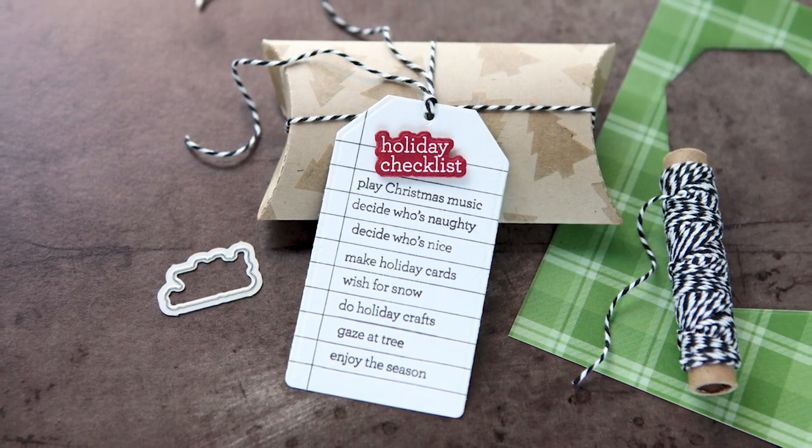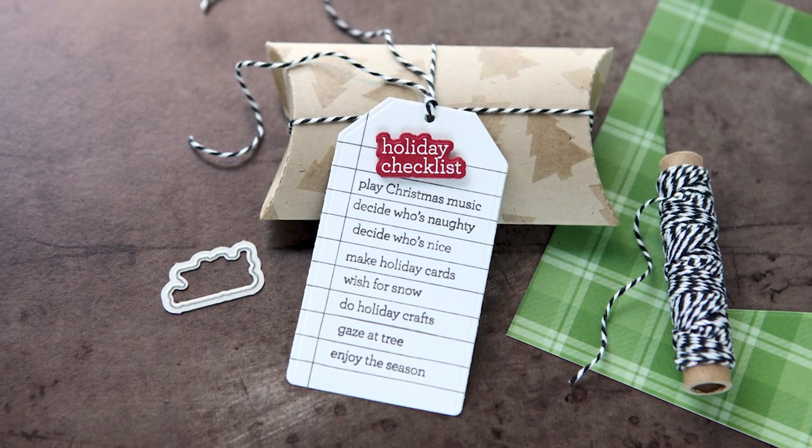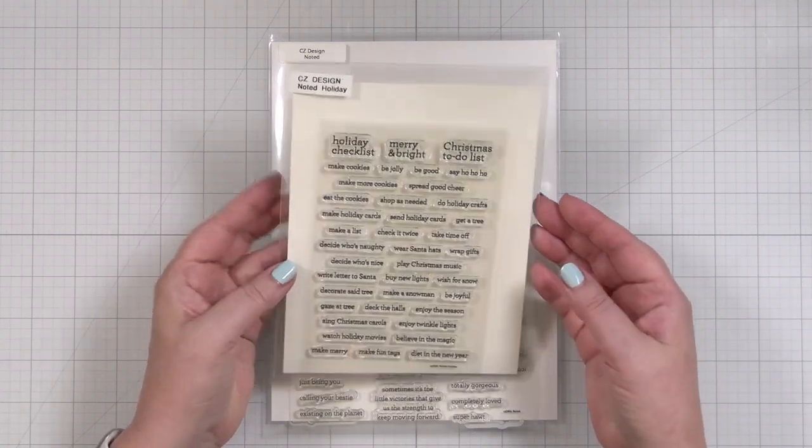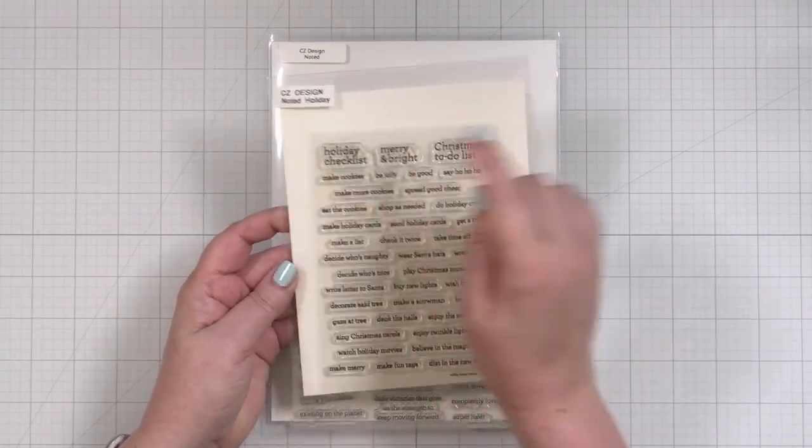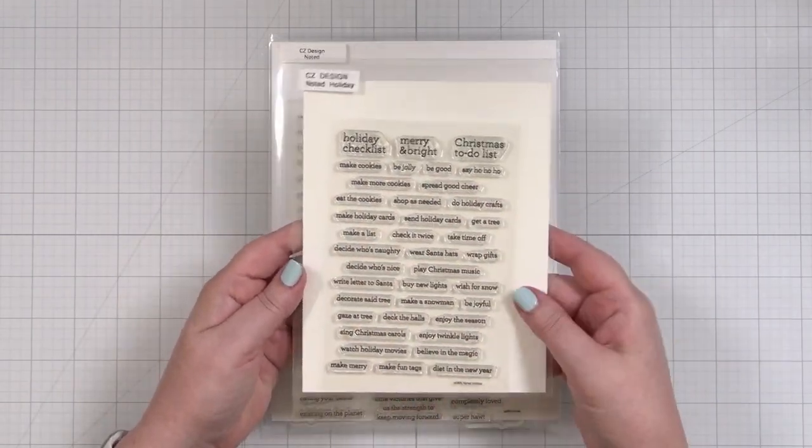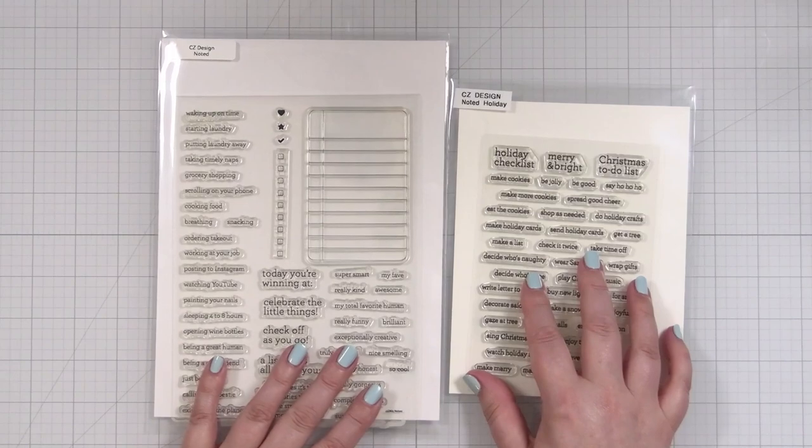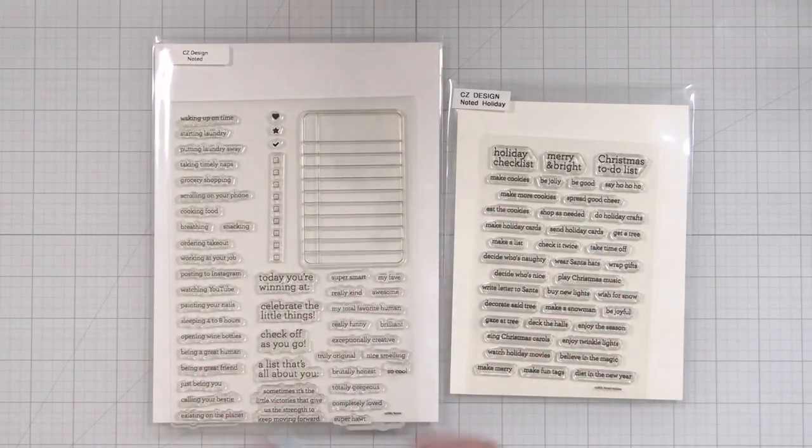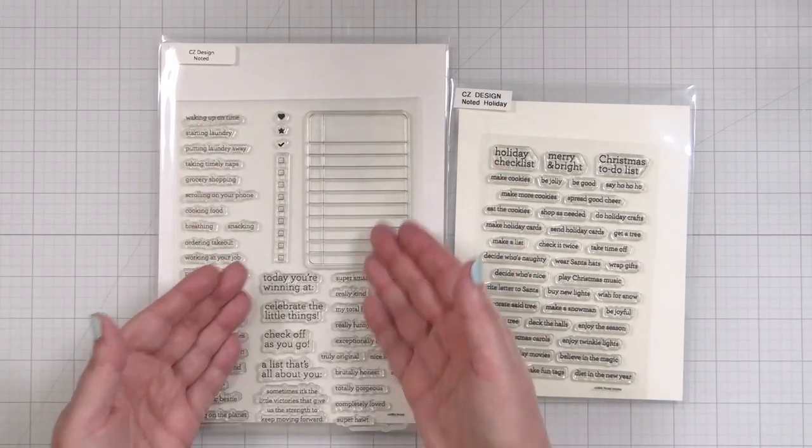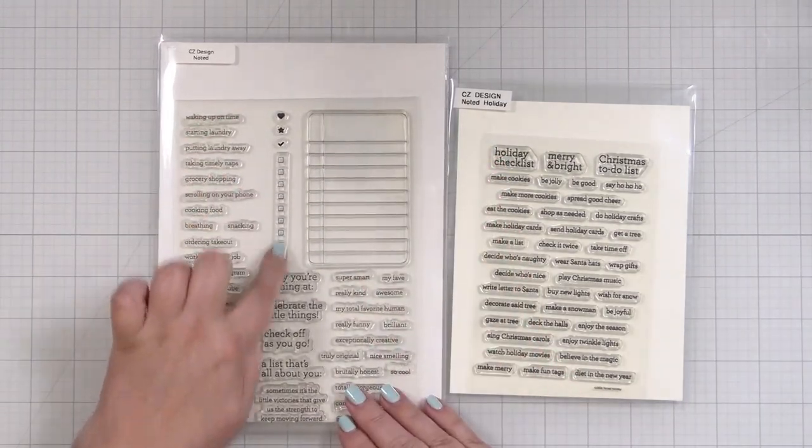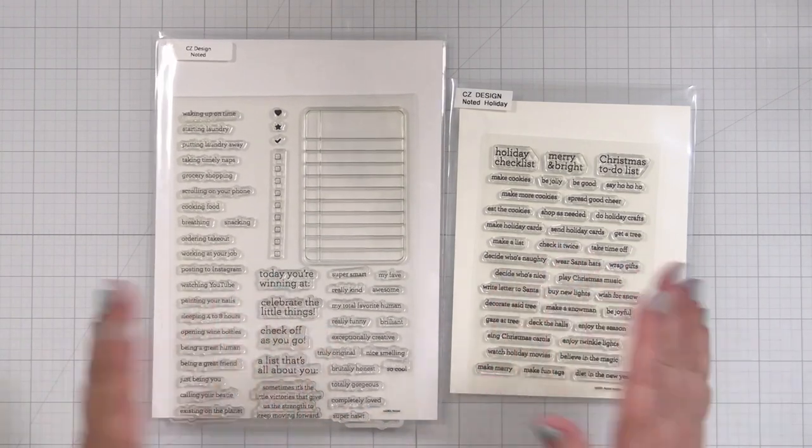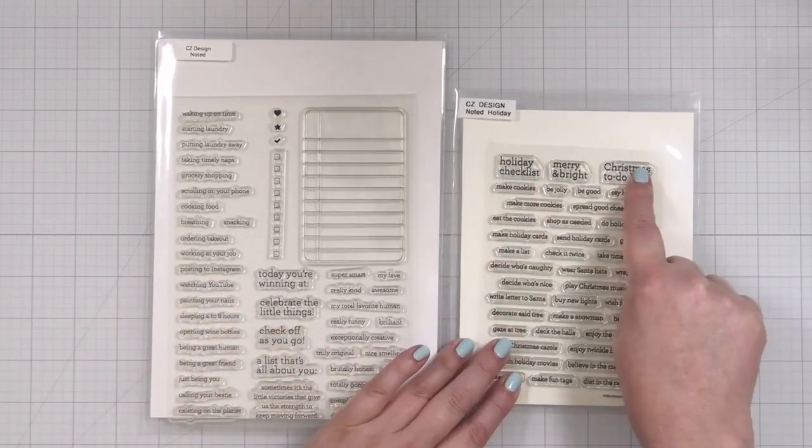It's easy to do, it's cute, and without further ado, let's get into it. Here's a look at the main stamp set that I want to use today, the CZ Design Noted Holiday. I designed all of these little items to be an add-on to the CZ Design Noted set. The whole idea behind this is that you make a little checklist with checkboxes and little titles, so I wanted to do a holiday checklist.